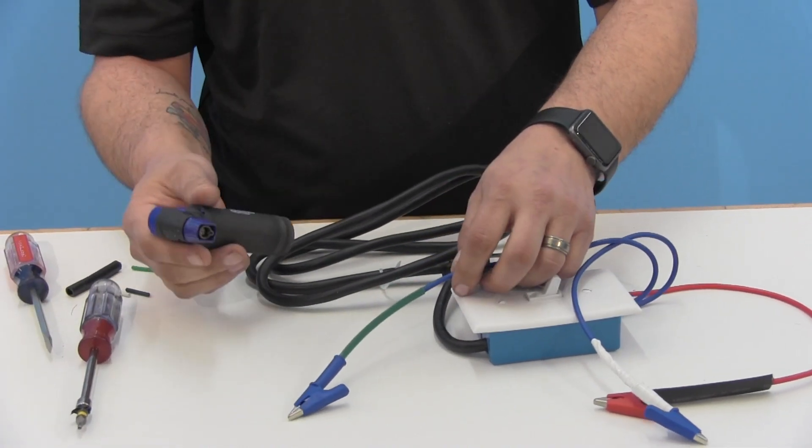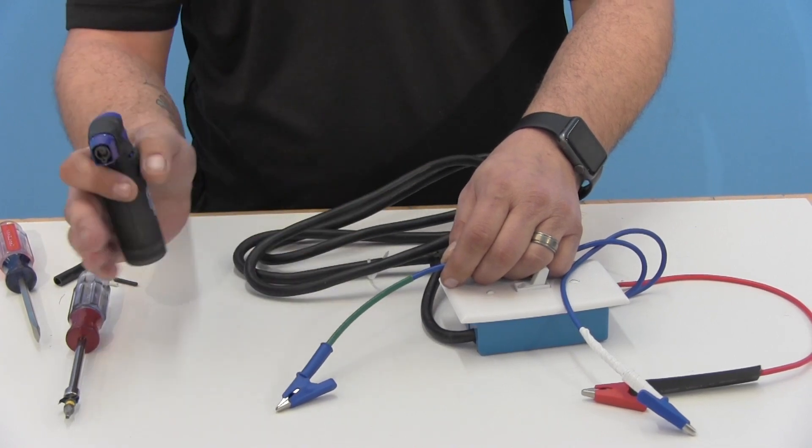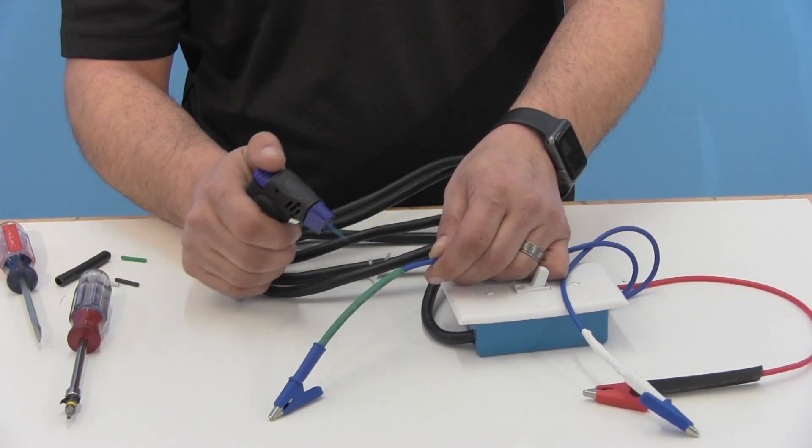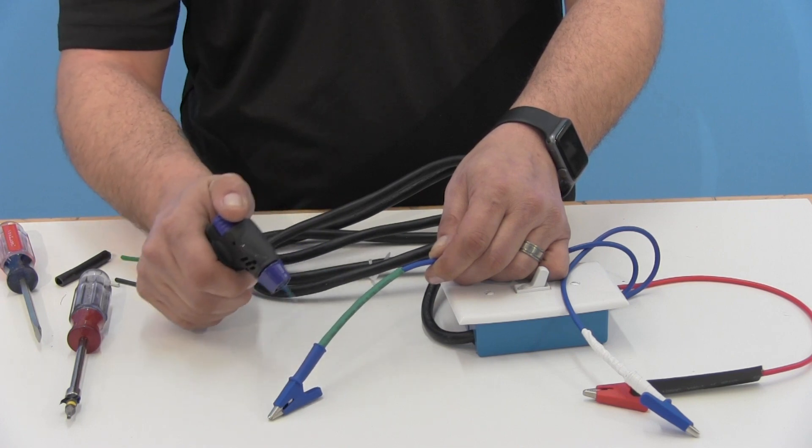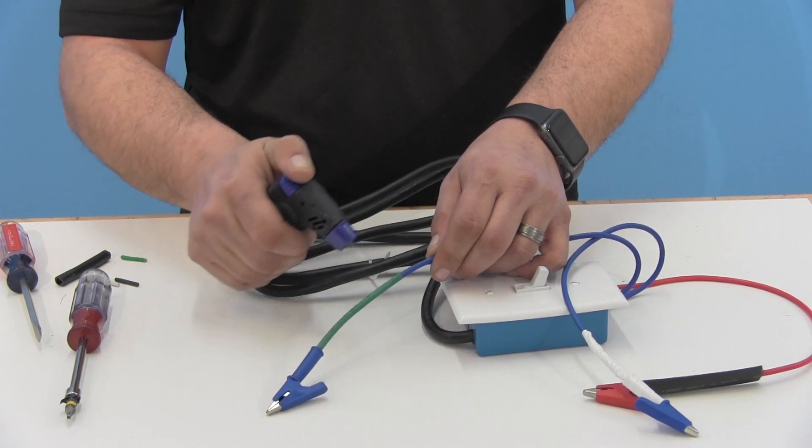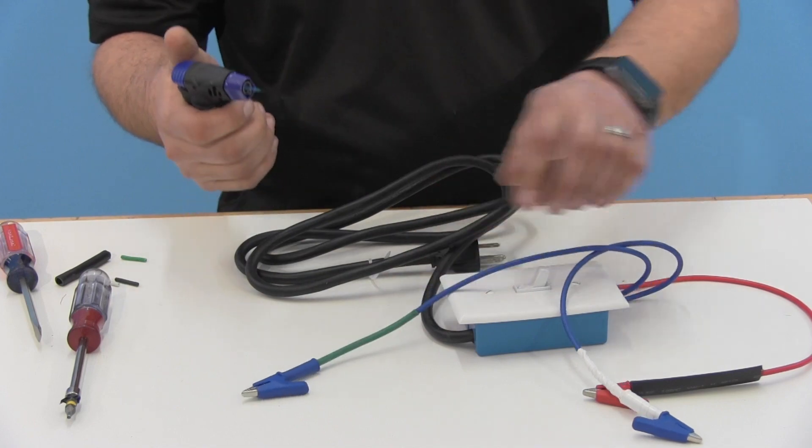You don't want to focus the heat directly on the wiring. You want to give it a waving motion and watching that shrink tubing shrink right around the wire there. You don't want to burn the wire. That one's done.